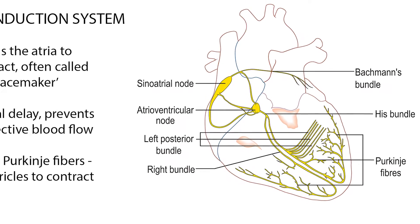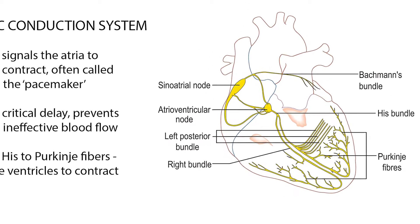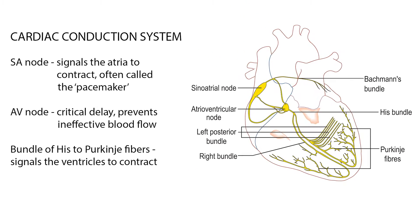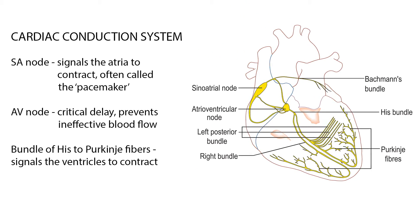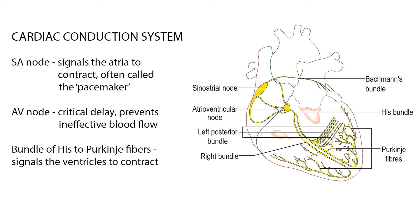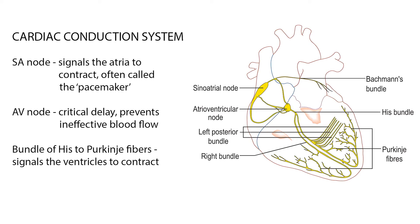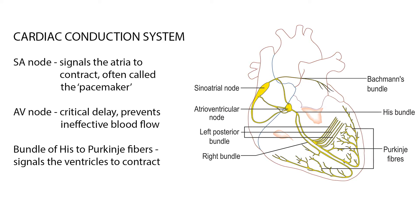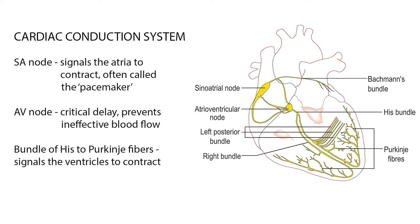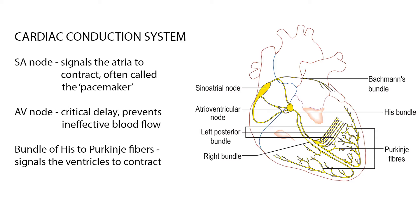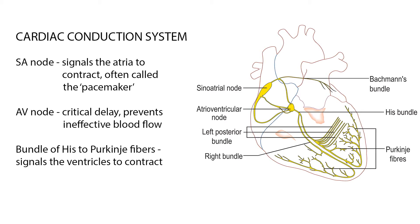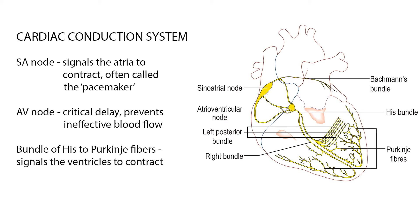The electrical stimulus generated by the SA node occurs 60 to 100 times per minute under normal conditions. Therefore the SA node is often called the natural pacemaker of the heart, and a normal heart rhythm is called a sinus rhythm.